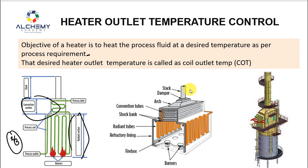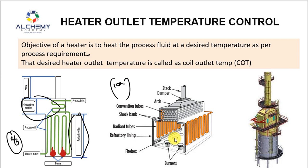Now, coming back to the control philosophy. For a natural draft heater, draft means: outside pressure is one atmosphere, and inside the firebox you maintain slightly lower pressure. That pressure difference is called the draft. If draft is maintained, the fire is contained in the firebox. If draft is lost, the flame can hit the tubes and come through the peep holes, potentially burning or radiating heat onto the person doing field rounds. So we must monitor draft from the DCS control system.